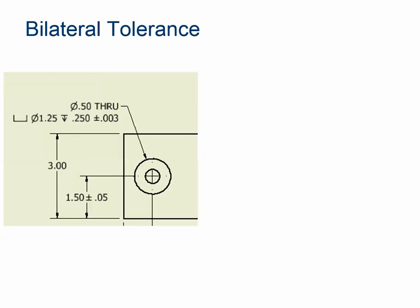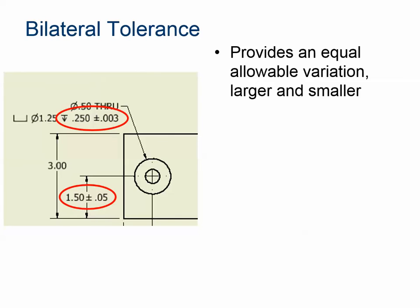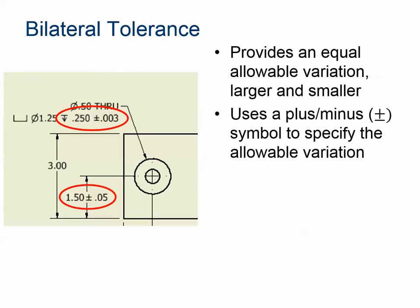Bilateral tolerance means that you have a specified target dimension that you're looking for, but if the result is more or less than 0.003 from that target, it's perfectly acceptable. When you see the plus-minus sign followed by a number, that is the sign that you're looking at a bilateral tolerance.